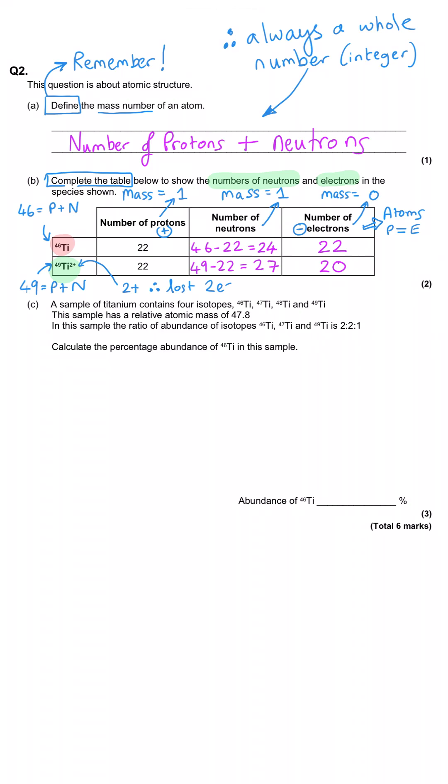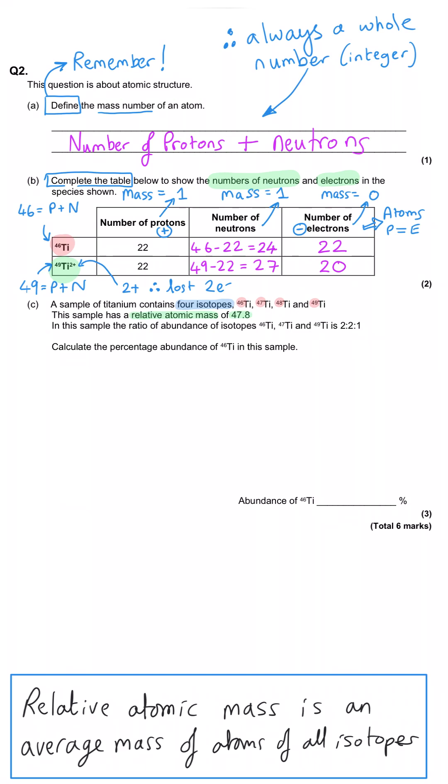In Part C, we're told that a sample of titanium contains four isotopes with a mass of 46, 47, 48 and 49. This sample has a relative atomic mass of 47.8. And what that means is the average mass of an atom of titanium has got a mass of 47.8. So there'll be some 46, 47, 48 and 49, but the average of them, if you had 100 of them on a balance, would be 47.8. And so that's how the relative atomic mass is different to the mass number. Mass number is always an integer. Relative atomic mass is often a decimal and we report it to one decimal point.